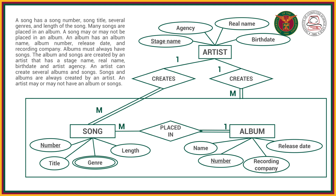Now let's go to the relationships, starting with song and album. A song may or may not be placed in an album — we have the relationship 'placed in.' Song may or may not be placed, meaning the participation of song is optional, so we have partial participation. But an album is always composed of songs, so we have double lines to represent total participation.